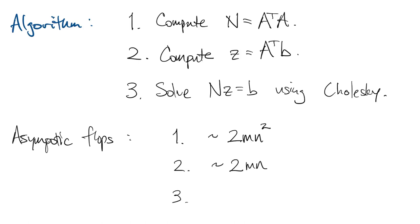And then the third step with Cholesky is one-third n cubed. So asymptotically we have to consider two terms not knowing the relationship between m and n.